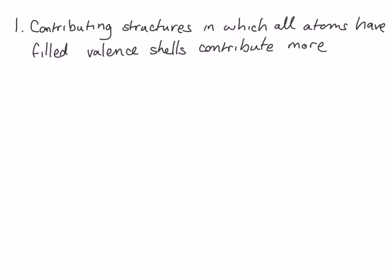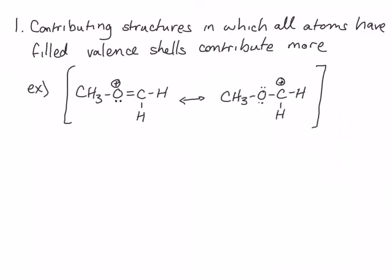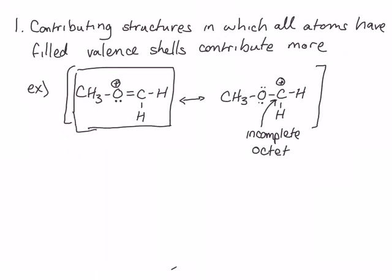First, contributing structures in which all atoms have filled valence shells are more stable and therefore contribute more. For example, let's look at this cation. We can draw an additional contributing structure to describe this cation that looks like this, but in this second contributing structure, this carbon atom has an incomplete octet. Therefore, it is higher in energy and contributes less to the resonance hybrid, meaning that the first structure is the major contributor to this resonance hybrid.